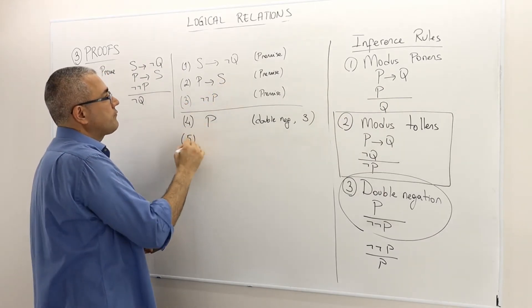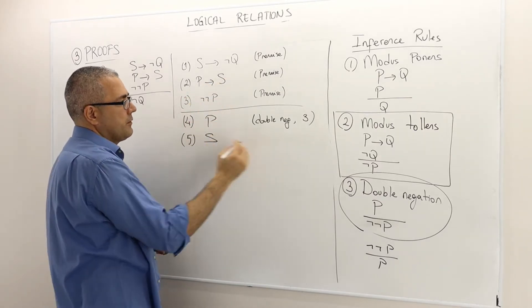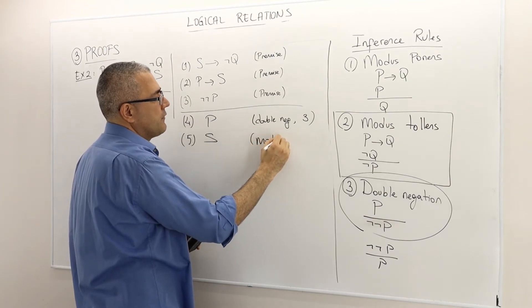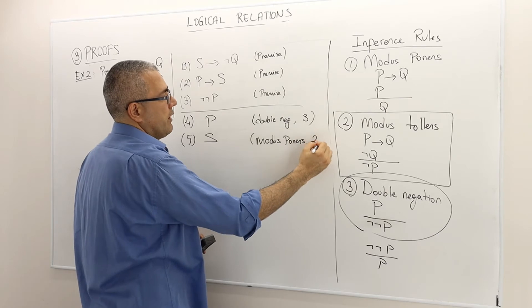So, therefore, P implies S is true, P is true, therefore S must be true, and this is because of the modus ponens of the arguments 2 and 4.